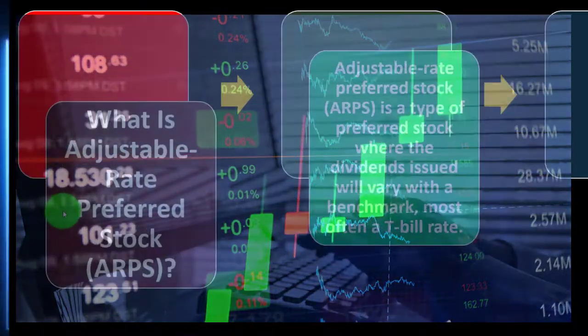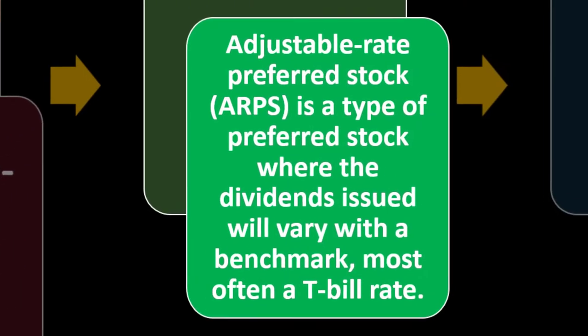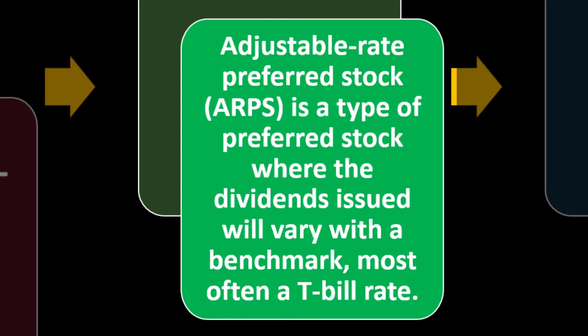Keeping that in mind, what is adjustable rate preferred stock? ARPS — adjustable rate preferred stock — is a type of preferred stock where the dividends issued will vary with a benchmark, most often a T-bill rate.